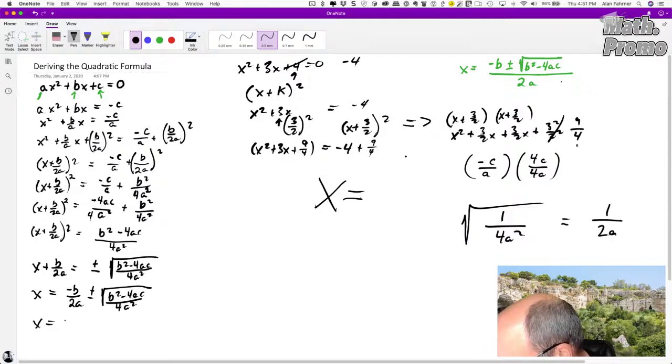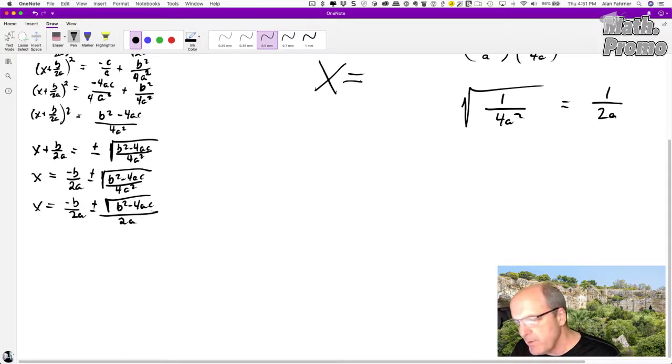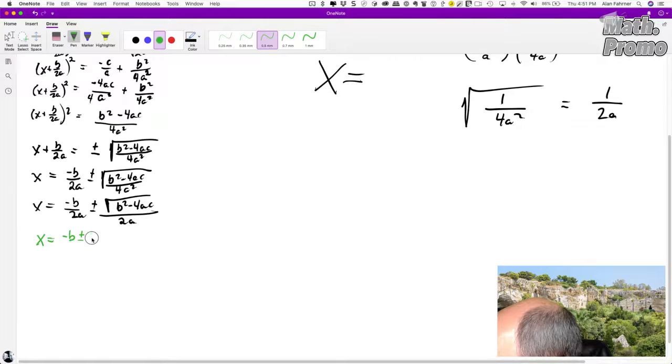We're almost there. What is the square root of 4A squared? That is equal to 2A. So we can now go one step further. We can say X equals negative B over 2A plus or minus the square root of B squared minus 4AC over 2A. We have a common denominator. Everything we need, we just need to put everything over the same denominator. We get X equals negative B plus or minus the square root of B squared minus 4AC over 2A.